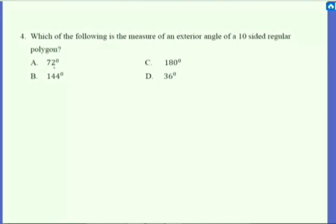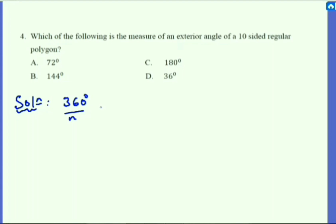Which of the following is the measure of an exterior angle of a 10-sided regular polygon? To answer this, we need to know only one thing: the exterior angle of an n-sided regular polygon is 360°/n. With n = 10, this is 360°/10 = 36 degrees. Therefore, a 10-sided regular polygon has an exterior angle of 36 degrees.